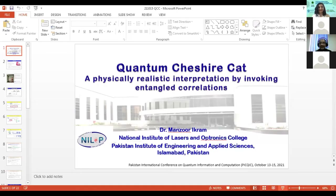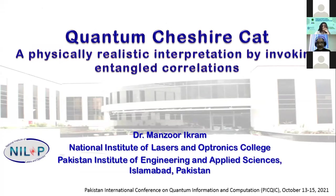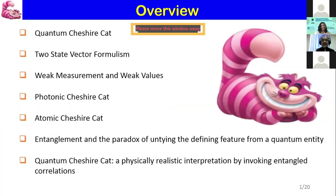Thank you for the introduction. Today I will talk about the Quantum Cheshire Cat. This might be new for the audience — you probably know about Schrödinger's cat, but I am talking about the Cheshire Cat, this is another cat. The outline of my presentation: first I will talk about the Quantum Cheshire Cat, then two-state vector formalism and weak measurement and weak values — this is the physics behind this Cheshire Cat.